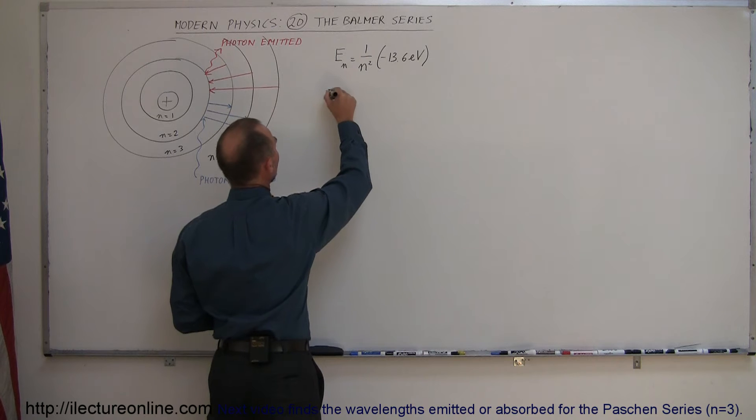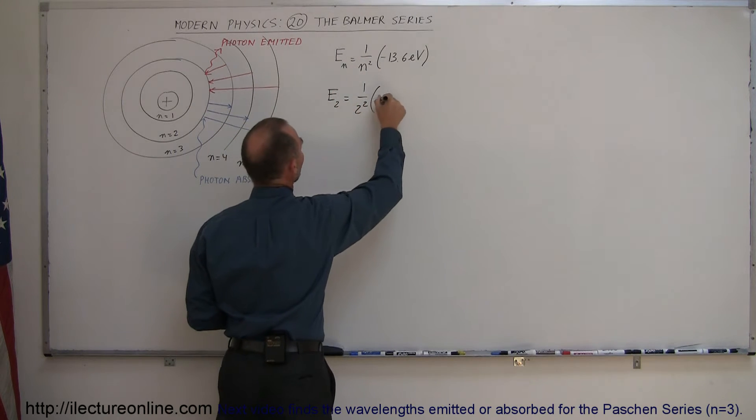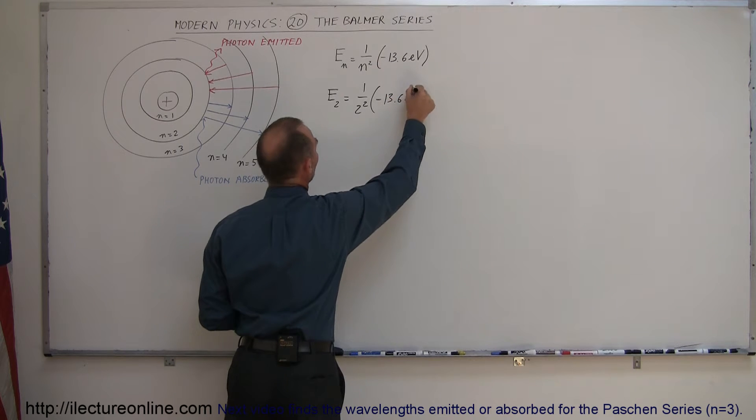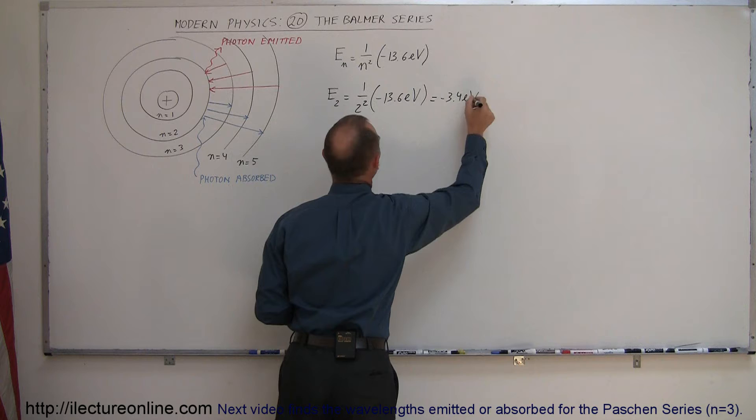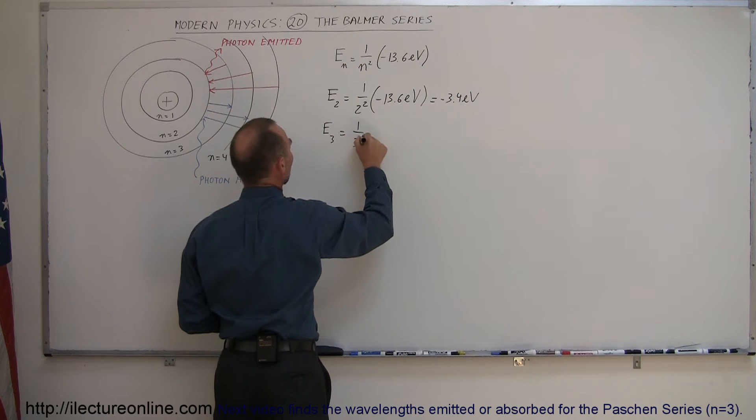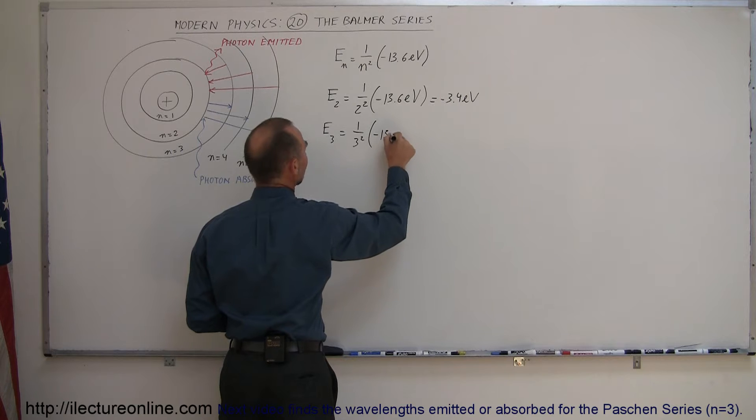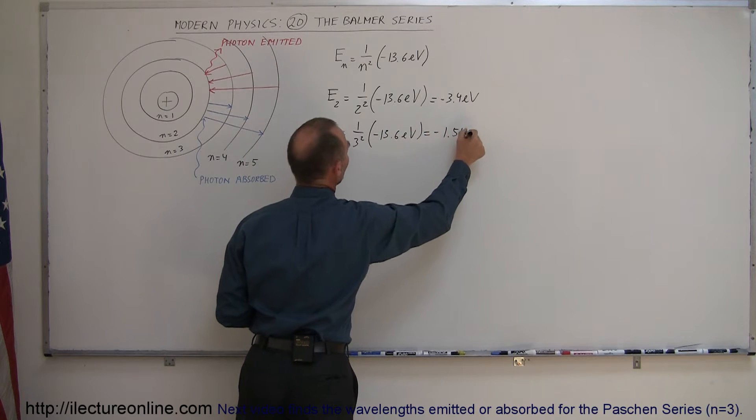So starting from n equals 2, we can see that E sub 2 is equal to 1 over 2 squared times minus 13.6 electron volts, and that would be equal to minus 3.4 electron volts. The energy of the third level is equal to 1 over 3 squared times minus 13.6 electron volts, which is minus 1.51 electron volts.